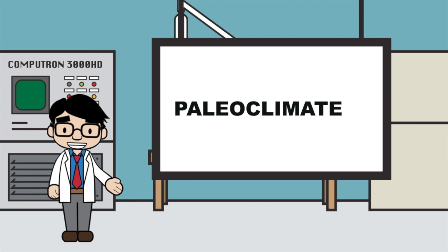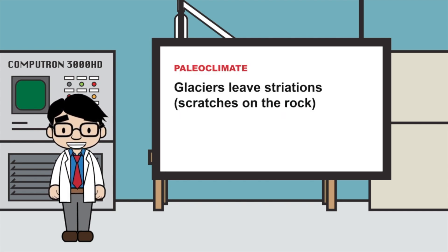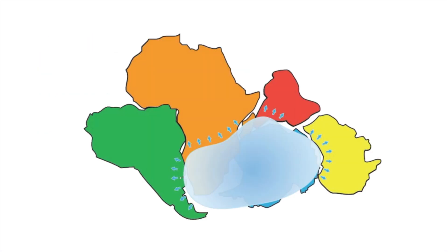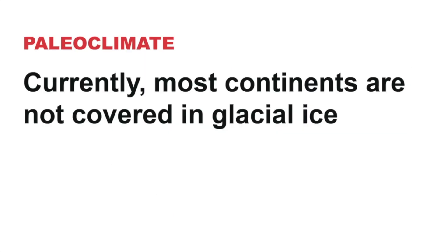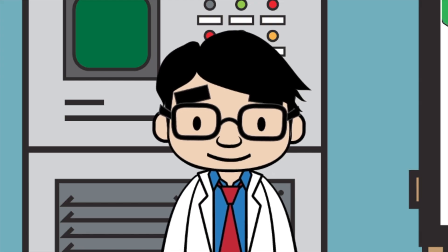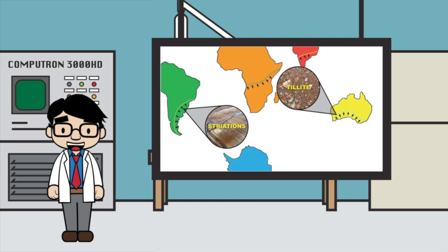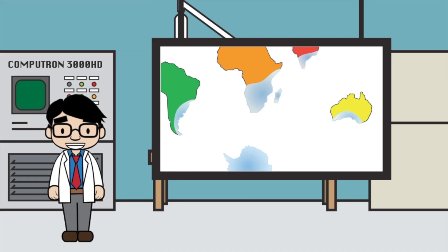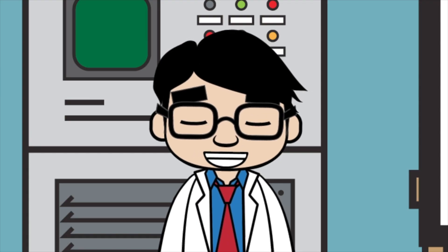Let's go over the paleoclimate evidence. Glaciers push away till, a mix of rocks, as they expand. Glaciers also leave striations, which are parallel scratches on rock. A glacier that would have formed when all the continents were together would have left striations and till behind. Currently, most continents are not covered in glacial ice. However, striations and tillite — a sedimentary rock made from till — have been found on separate continents. This means the continents were once covered in glacial ice, and striation patterns and tillite deposits outline the edge of a glacier when the continents are joined together.